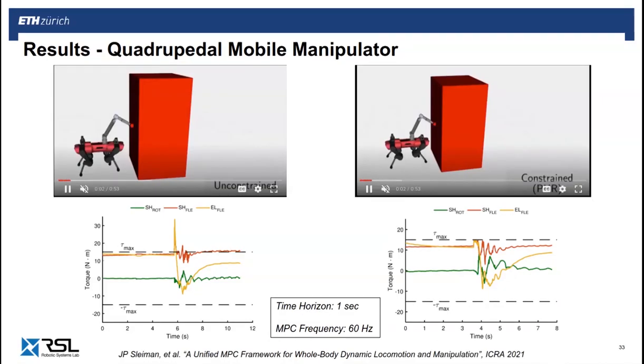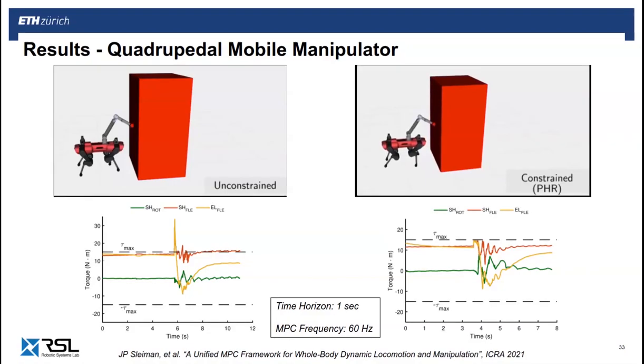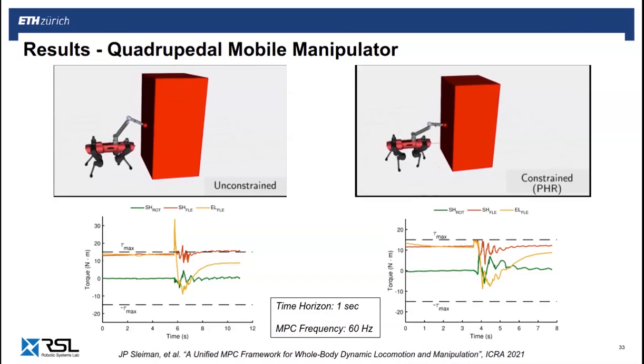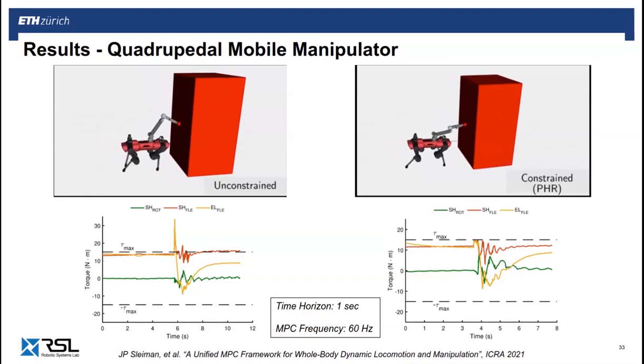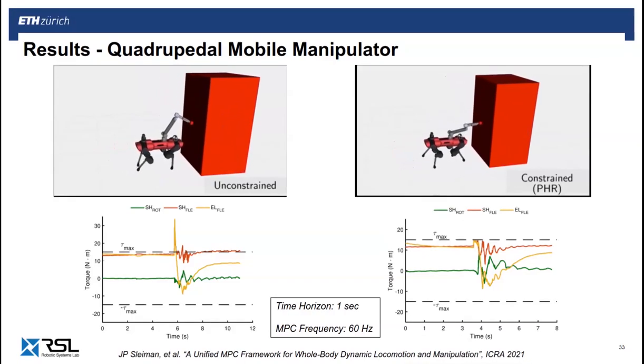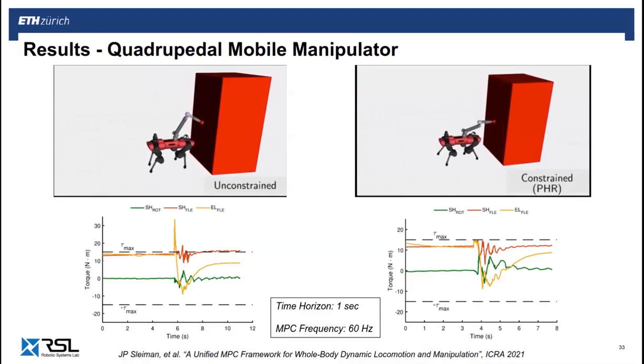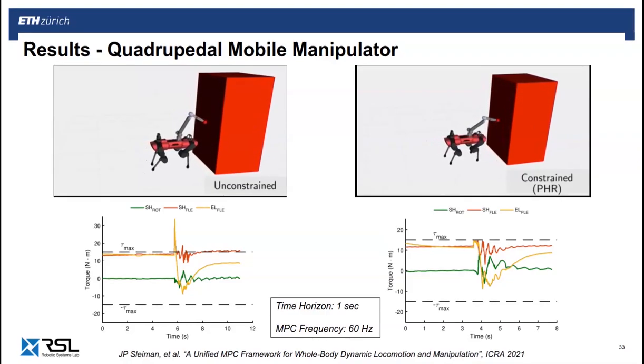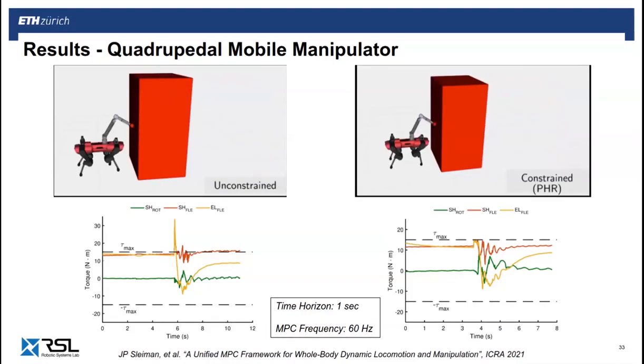In this last example, a quadrupedal mobile manipulator is required to push a 10kg block. Both the locomotion and manipulation tasks are encoded with a set of state input equality constraints. Moreover, inequality constraints are introduced to enforce torque limits on the arm joints. The relaxed barrier method either fails to converge or violates the constraints, so we only discuss the augmented Lagrangian penalties. In these cases, we notice that the solver discovers whole body motions that tend to drive the arm close to a singularity while pushing the block. This provides the necessary pushing force without the need to violate any of the arm torque limits.